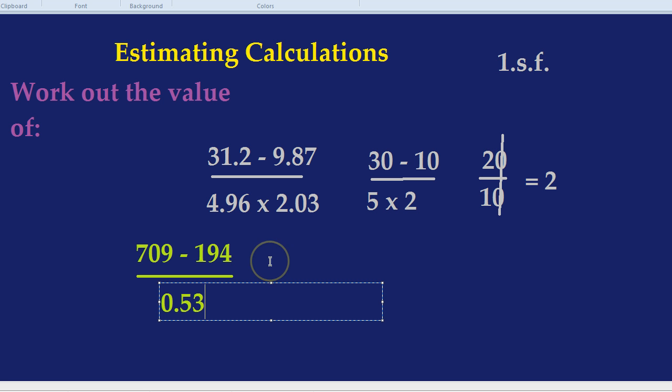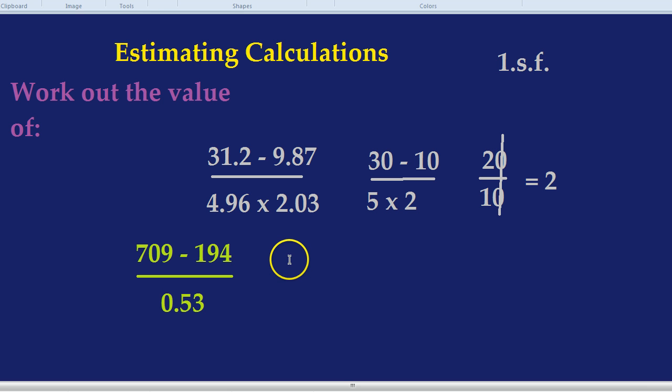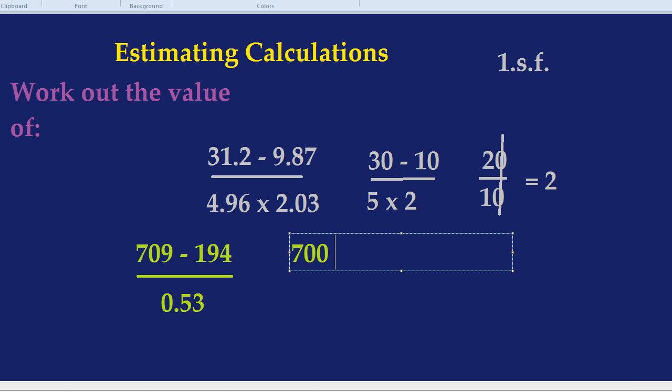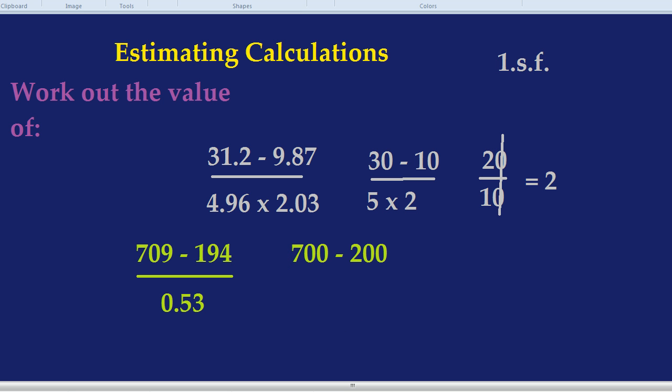709, what's the one number that would become with just zeros around it? That would become 700. And the 194, if you round that to one number and one number only it would actually become 200. Notice it wouldn't become 100 because the 190 rounds to 200 rather than 100 because it's closer.